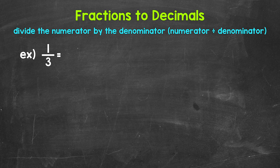When we convert a fraction to a decimal, we can do this by dividing the numerator — the top number of the fraction — by the denominator, the bottom number of the fraction.